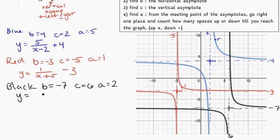So Y is equal to 2 over X minus C, which is 6, plus B, which is negative 7, so I'm just going to say negative 7. So I've got Y is equal to 2 divided by X minus 6, all on the bottom, minus 7.